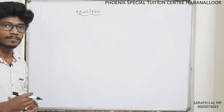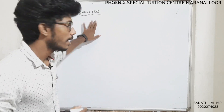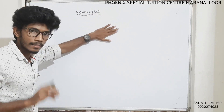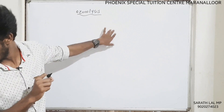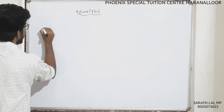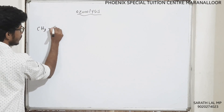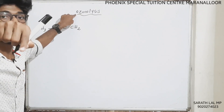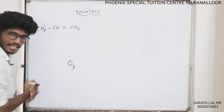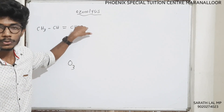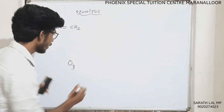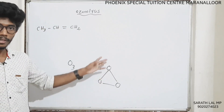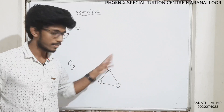Now, ozonolysis. I will talk about alkene and previous exam questions. For example, CH3-CH2-CH2-CH2-CH2 — this is called ozonolysis. If you have a double bond or a coordinate bond, then you have a close figure. Ozone reacts with that structure.